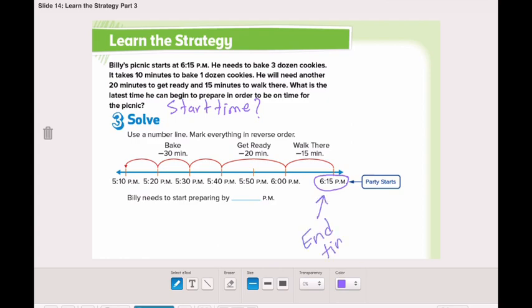Why is it the end time? Because it's the time where the party starts. So, Billy should be at the picnic at this time, 6:15 p.m. He should be done with everything and at the party with the cookies ready.